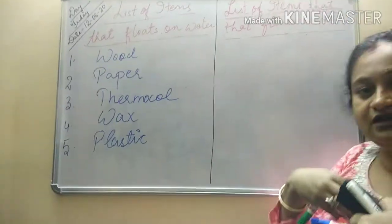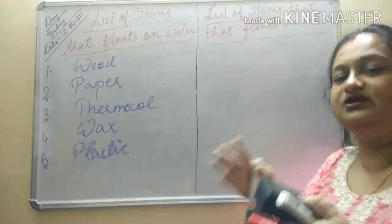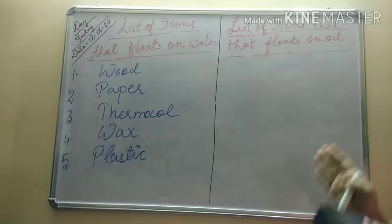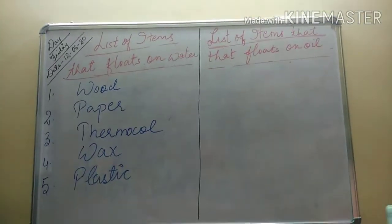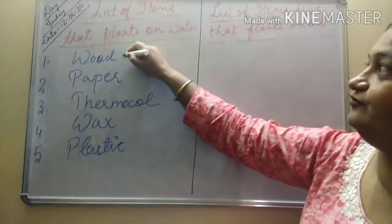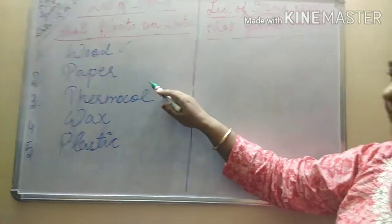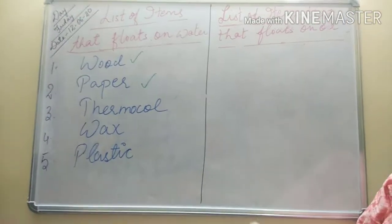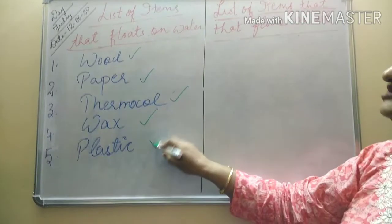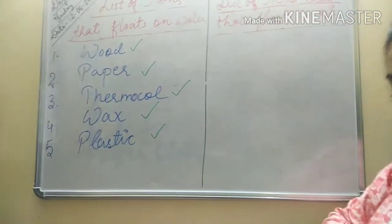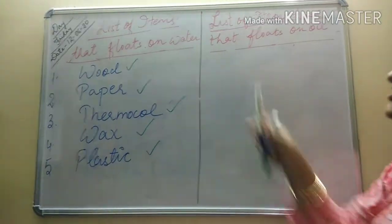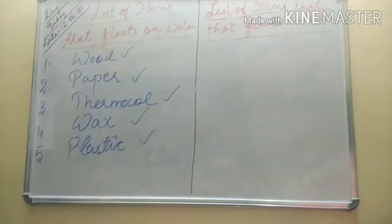Now you have to check whether things which I'll be giving you float on water and whether the same items float on oil or not. The first item is wood — yes, wood floats on water. Second, paper — yes, paper also floats on water. Thermocol floats on water. Wax floats on water. Plastic floats on water.